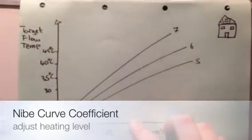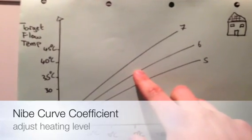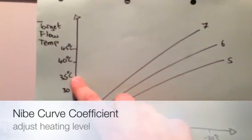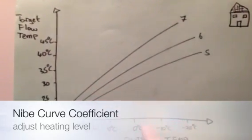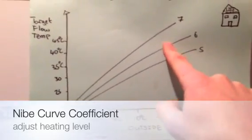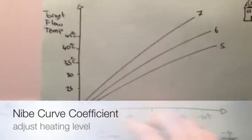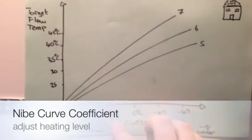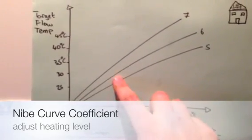For example's sake, at 0 degrees outside on curve coefficient 6, we're looking for 35 degrees to go into the building. As it gets colder outside, we look for a higher temperature to go into the building. As it gets warmer outside, we look for a lower temperature to go into the building.